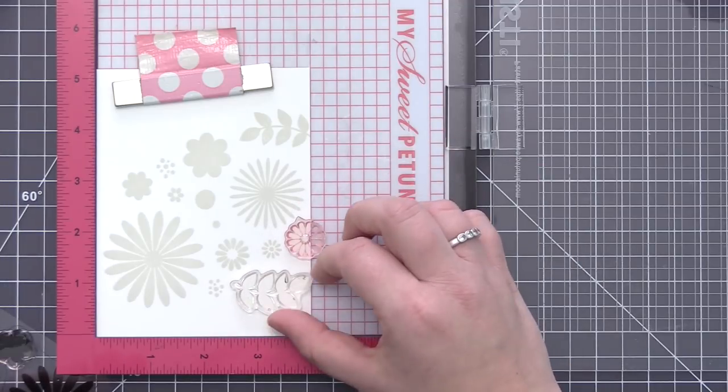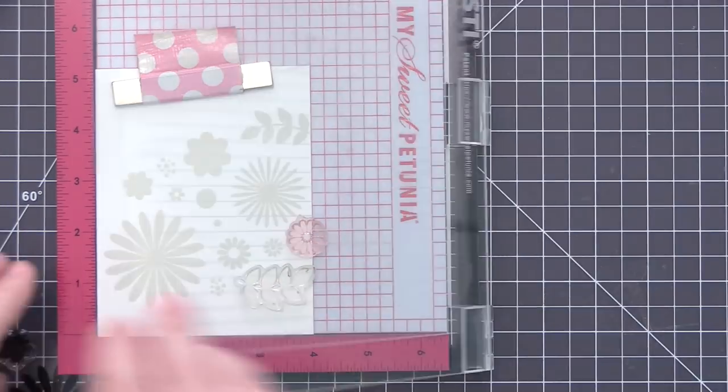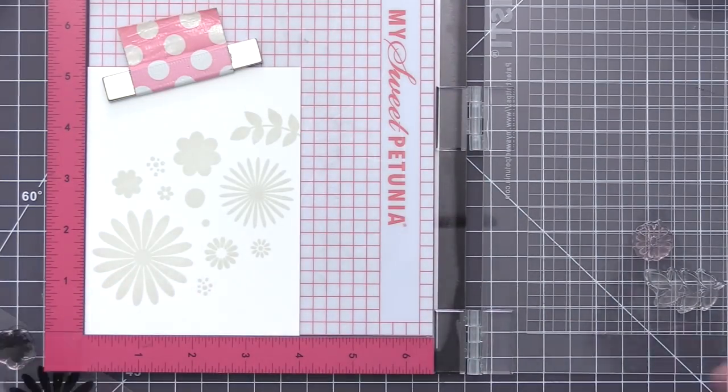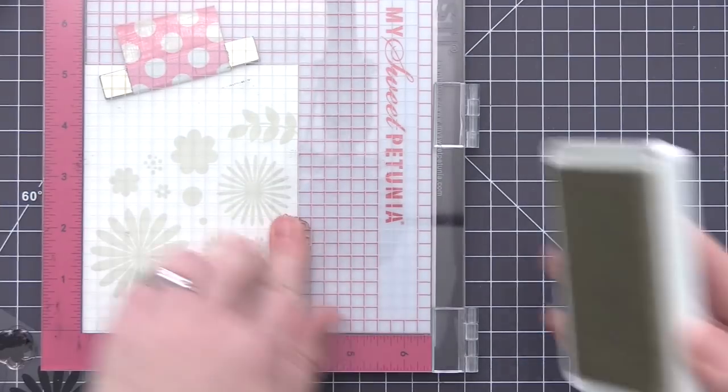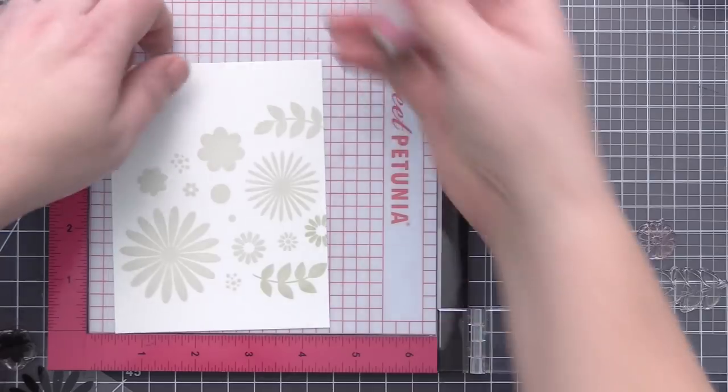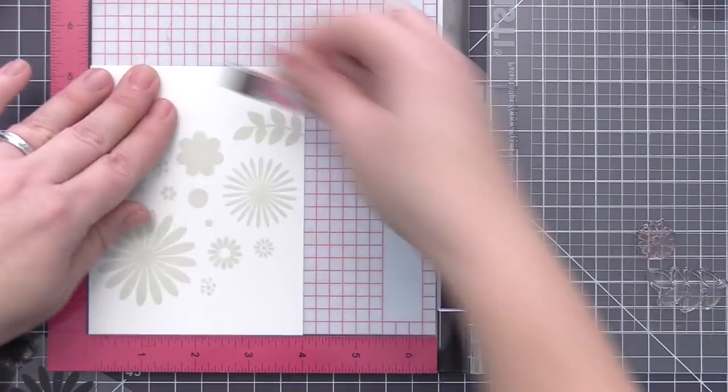So in this stamp set there's only one leaf design. So once I stamped out the initial design, I removed all of the stamps from my Misti and then I reused one of the flowers and one of the leaf stamps so that I could fill up the panel a little bit more. And I am stamping this onto three separate panels, so when we're done we're going to have three cards in total.